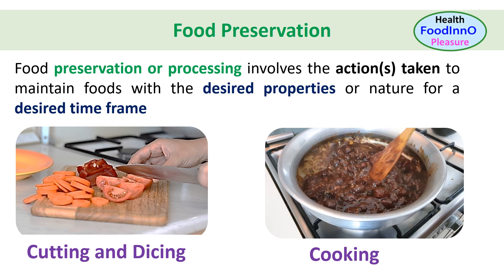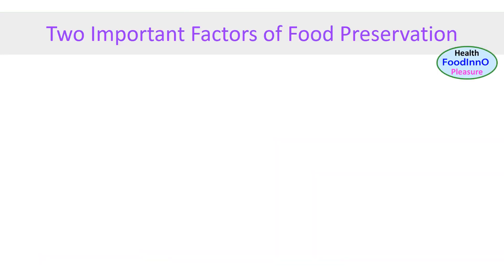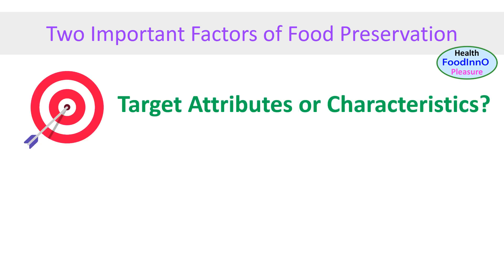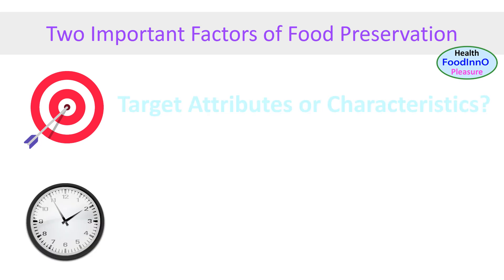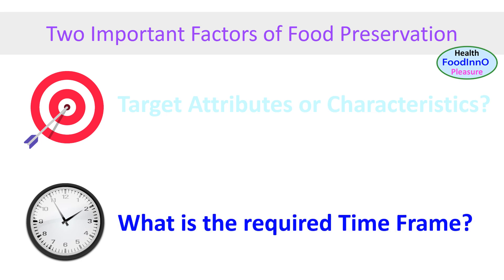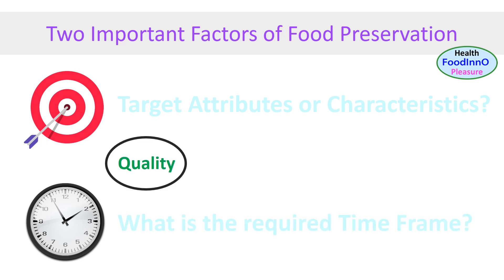The second example is cooking — the actions are heating and mixing, and the purpose is the killing of bacteria, ease of consumption, flavor and texture development, and ease of digestion. When we want to preserve a food, two questions we need to ask: first, what are the target attributes needed in relation to microbial, chemical, biochemical, and physical attributes? Second, what is the time frame or period of preservation? We need to target microbial and chemical safety first, then sensory and nutritional quality.